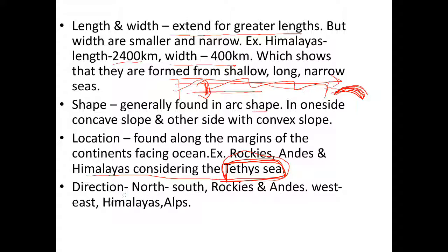Most folded mountains run in a north-south direction — for example, the Rockies and Andes. Others run in a west-east direction, such as the Himalayas and Alps.